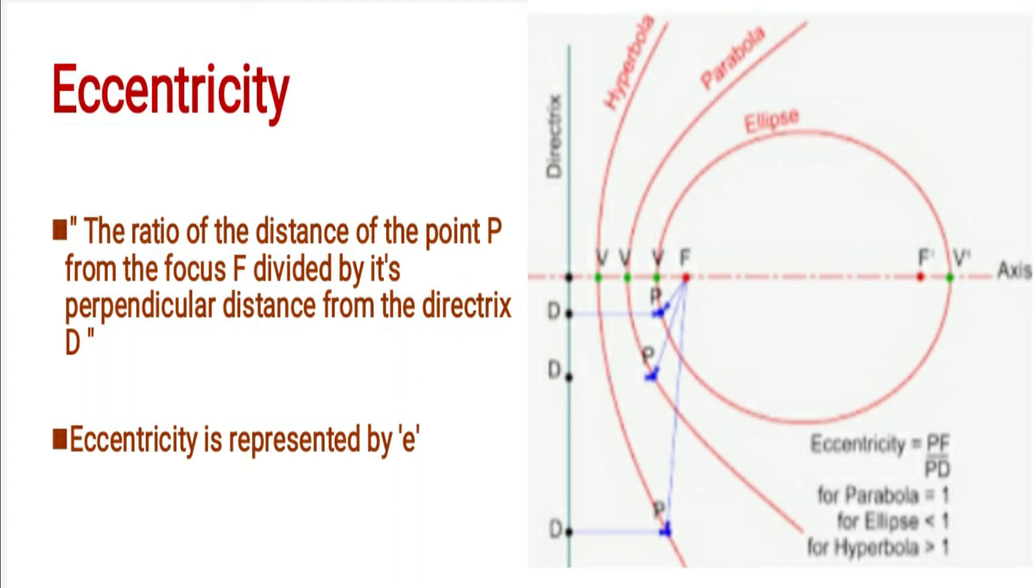We can define eccentricity as the ratio of the distance of the point P from the focus F divided by its perpendicular distance from the directrix D.